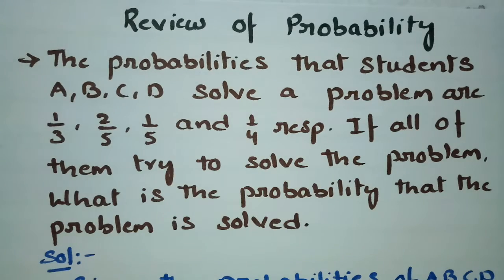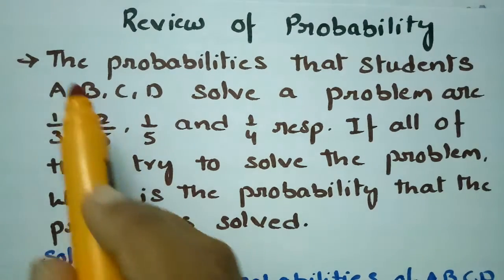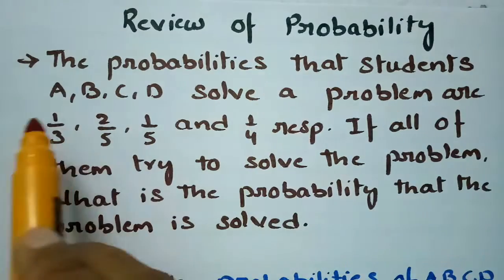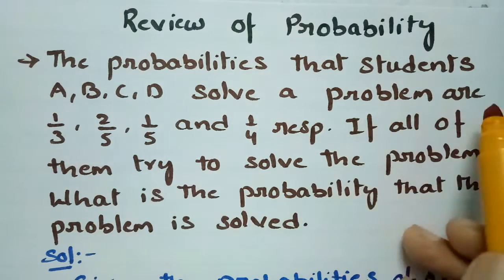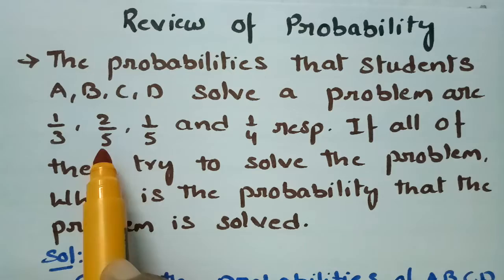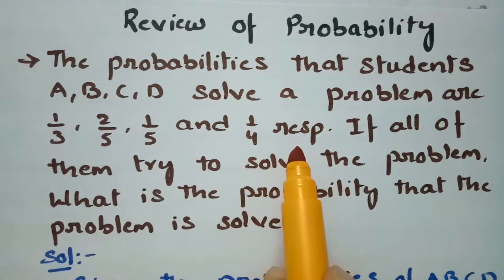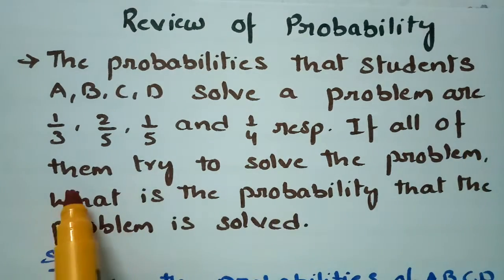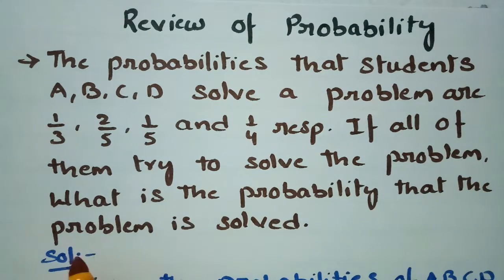This problem is from probability. In this question, the probabilities that students A, B, C, D solve a problem are 1/3, 2/5, 1/5, and 1/4 respectively. If all of them try to solve the problem, what is the probability that the problem is solved?